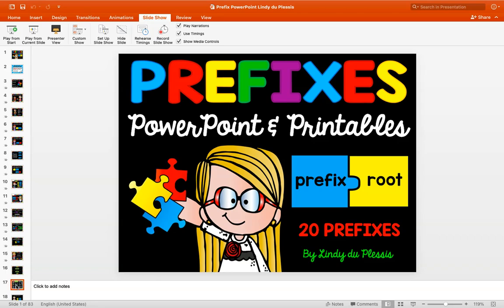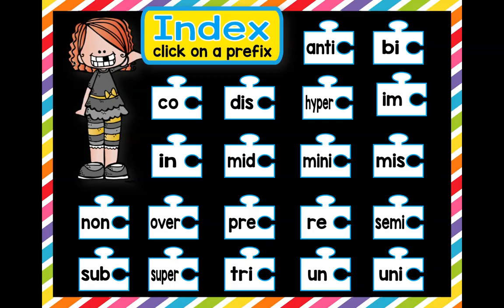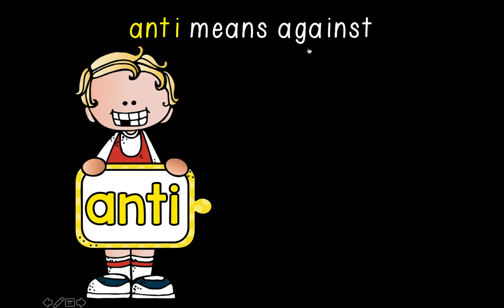So I want to start right here in our index. We learned today five new ones, and here's a sneak peek: anti, bi, co, hyper, and im. Let's look at these closer. Anti means against. Say that with me — anti means against. If you're anti anything, that means you are against it.